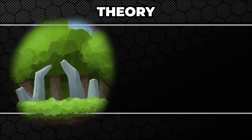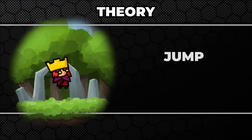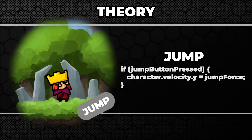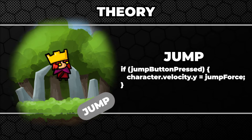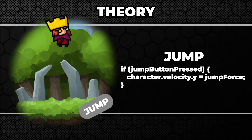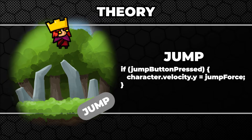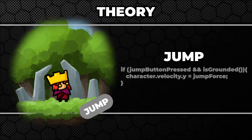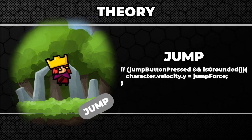Theory time! To make the character jump, we usually assign a positive value to its rigid body vertical velocity, of course after the jump button is pressed. Without any constraints, this will make the character jump every single time the jump button is pressed. In order to prevent that, we usually check if the character is standing on the ground.